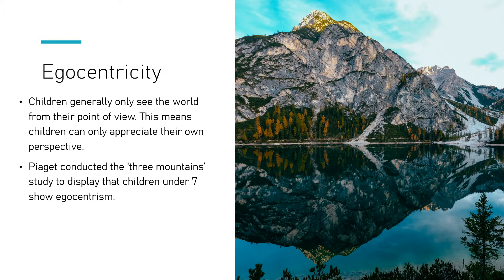Piaget tested this using something called the Three Mountains experiment, which became quite a famous experiment in psychology. They gave a model of three mountains to children under seven and children over seven. What they found was that children under seven performed quite poorly in the Three Mountains task, showing egocentrism — they could only see things from their own point of view — whereas children over seven tended to do a lot better and could understand things from other people's point of view.